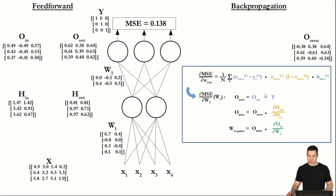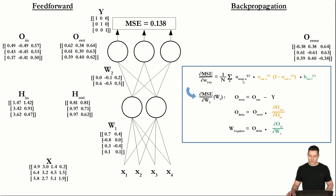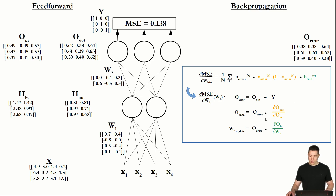Now to understand the second step, let's rewrite this expression as O_error_N of example E. In this next step, for a specific element of the output error matrix we want to multiply that element by the respective element in the output layer output matrix, and then by one minus that element. For example, this element here we multiply with that one, and then with one minus that element.